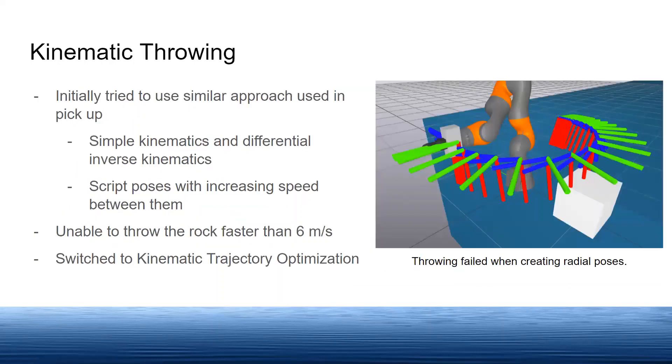We initially thought to try a similar approach with kinematic throwing by creating radial poses as seen in the picture. But we were unable to throw the rock any faster than 6 meters per second. This occurred since differential inverse kinematics only utilizes the very next pose, which would lead to unadvantageous joint positions.